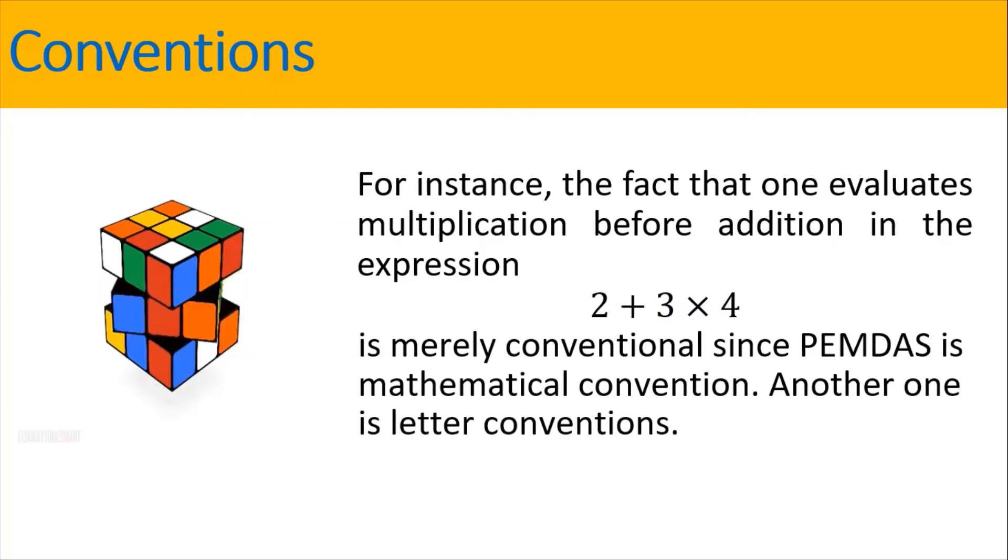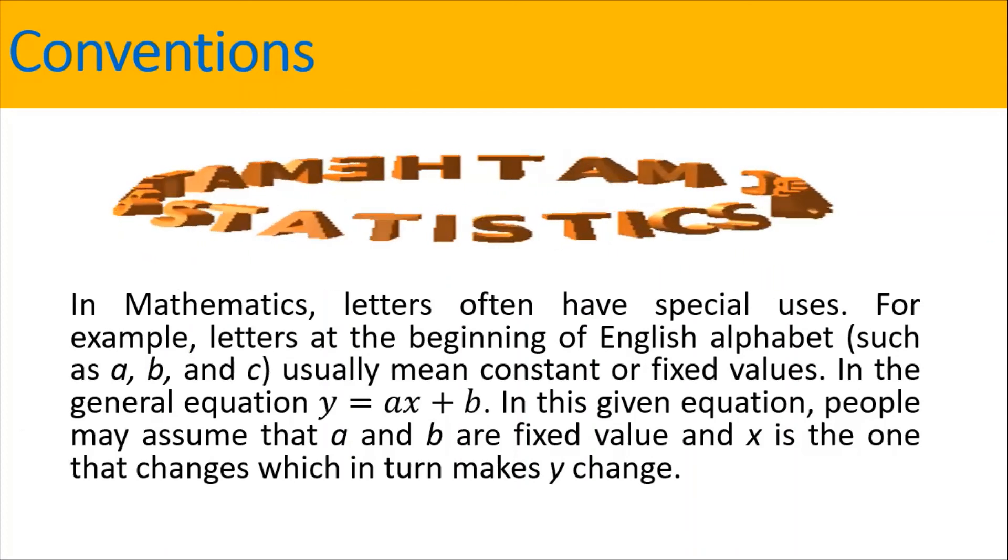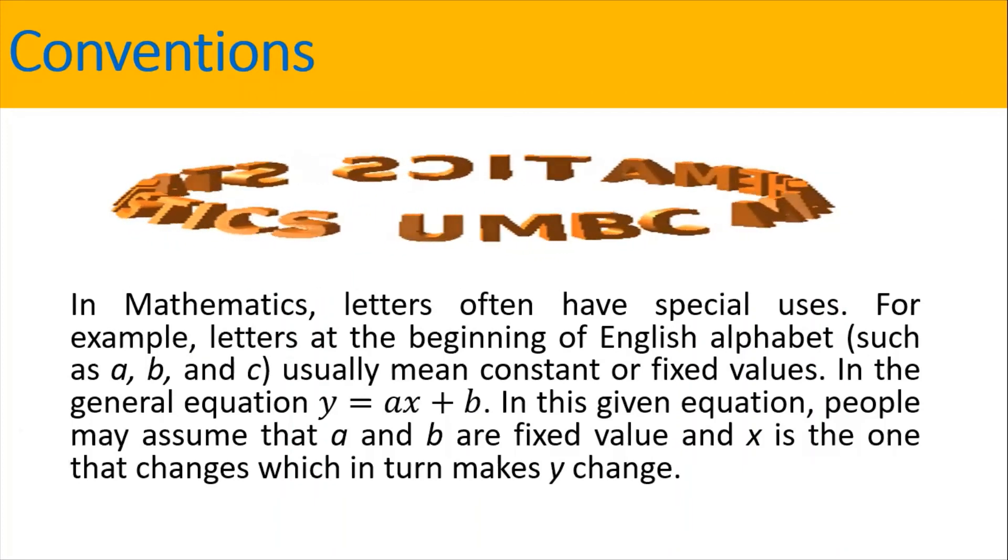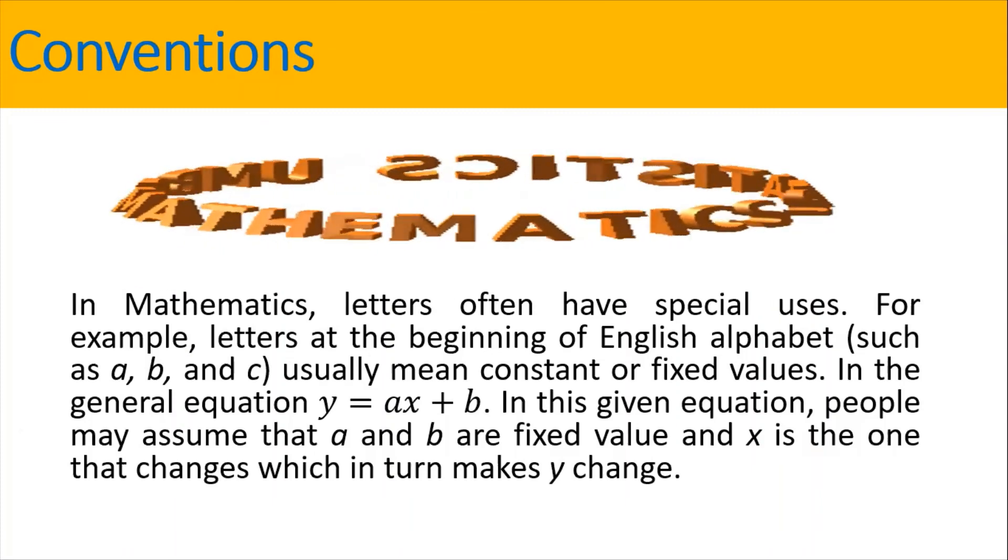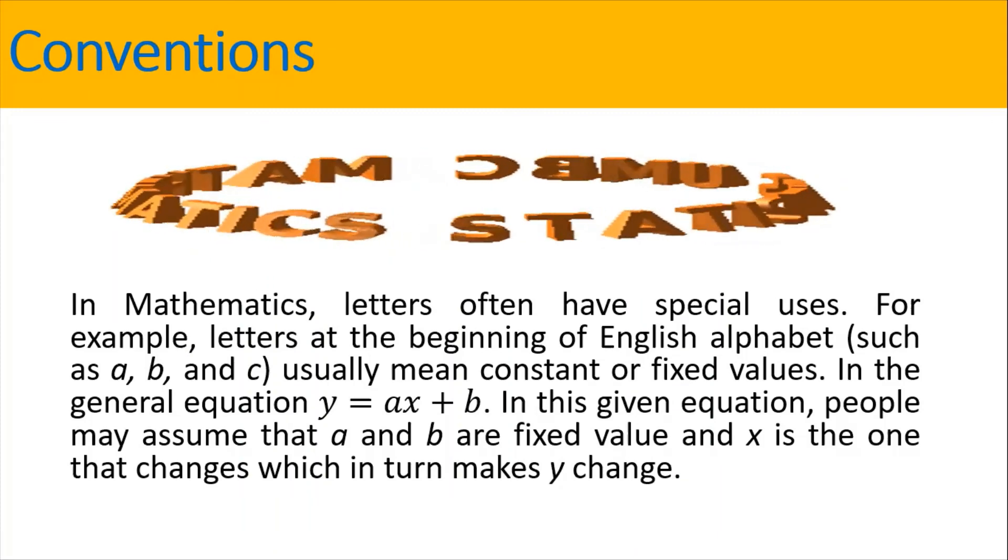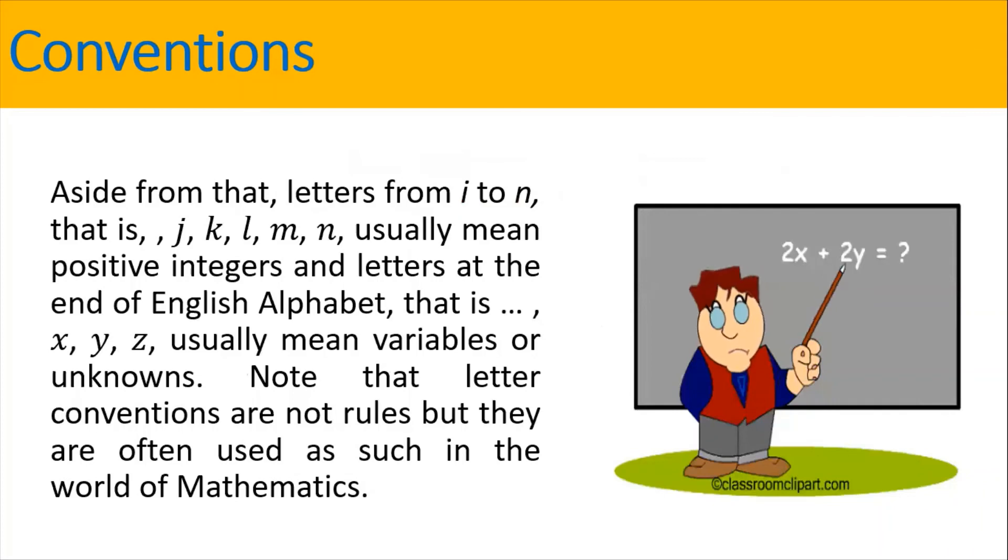Another one is letter conventions. In mathematics, letters often have special uses. For example, letters at the beginning of English alphabet usually mean constant or fixed values. In the general equation y equals ax plus b, in this given equation, people may assume that a and b are fixed values and x is the one that changes which in turn makes y change. Aside from that, letters from I to N, that is J, K, L, M, N, usually mean positive integers, and letters at the end of English alphabet, that is X, Y, Z, usually mean variables or unknowns. Note that letter conventions are not rules, but they are often used as such in the world of mathematics.